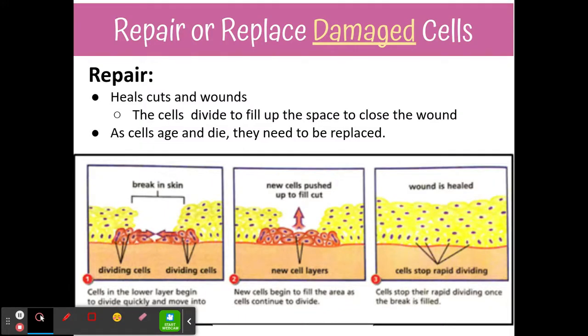There are four reasons. First, cells will divide to repair or replace damaged cells. If you get a cut and need to heal, or cells age and die, those damaged cells need to be replaced.